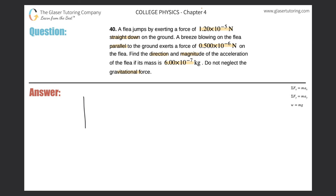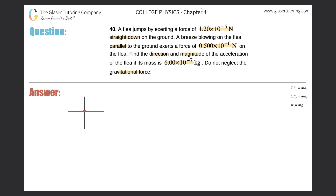First, let's draw a free body diagram — the center represents the flea. You might read that the 1.2×10⁻⁵ N force points straight down, but that would be incorrect. We're concerned with finding the magnitude and direction of the acceleration of the flea, so we need to know the forces acting on the flea.